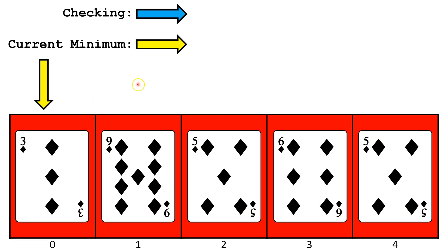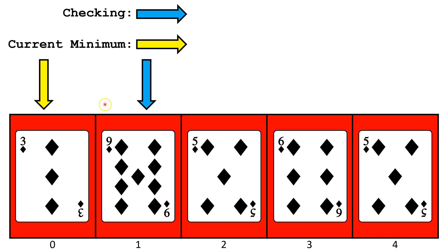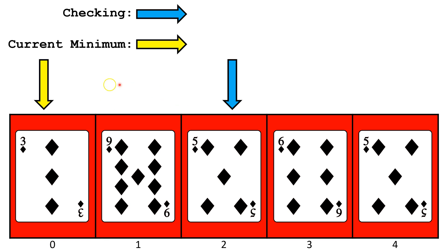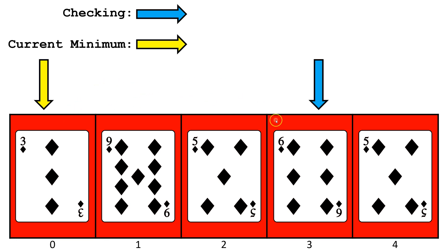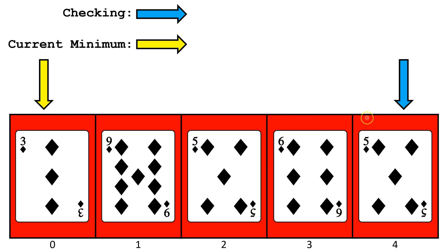Then we start checking at the next index in the unsorted portion of the list. We see, is this index smaller than the current minimum? It's not, so we move on. We check, is this index smaller than the current minimum? It is not. We check, is this index's value smaller than the current minimum? It is not. Now we'll check, is the final index value smaller than the current minimum? It is not. So we've reached the end of the list, and we can determine that this is the minimum value.